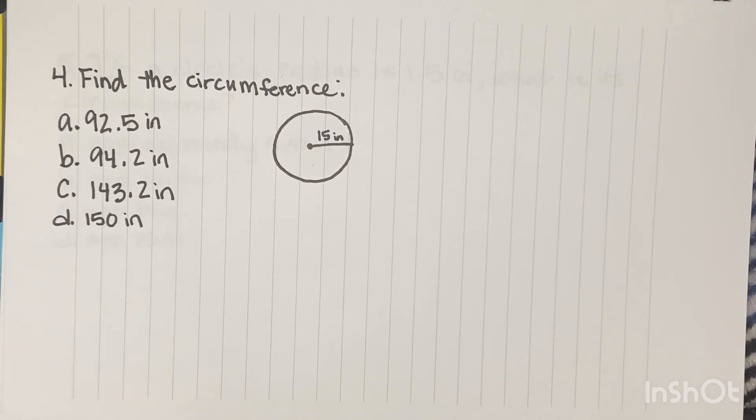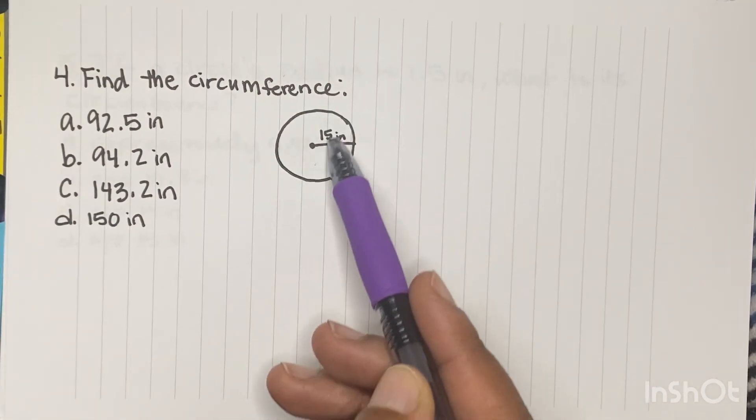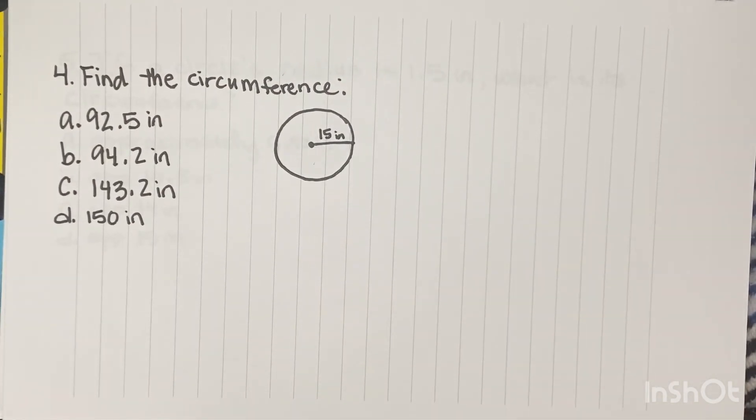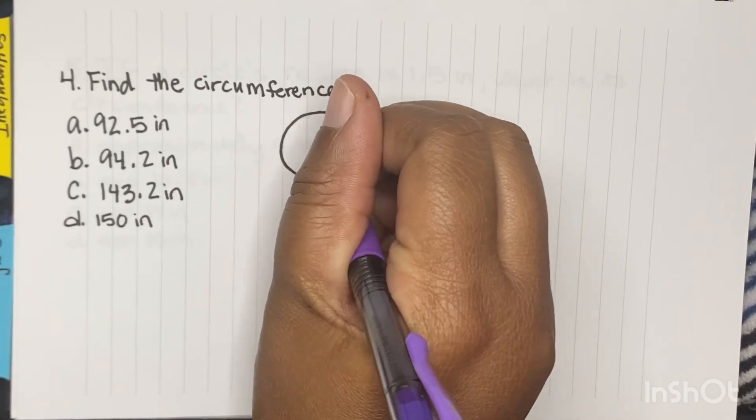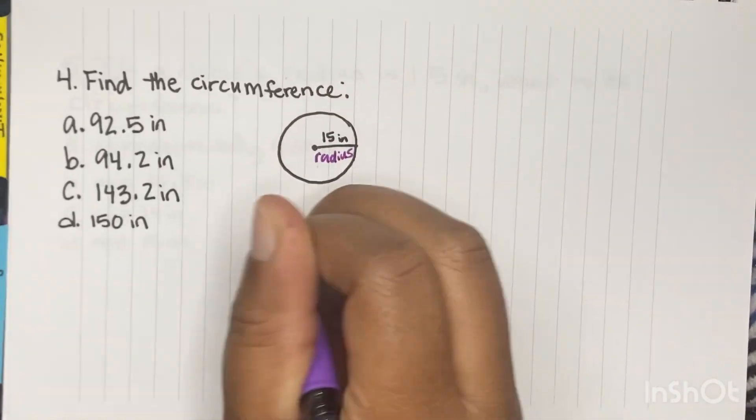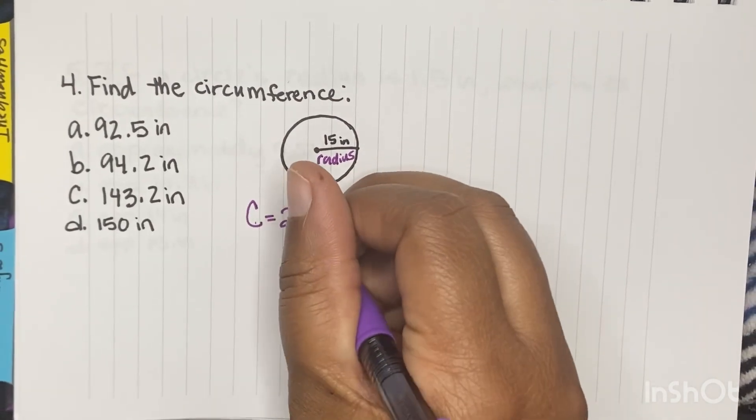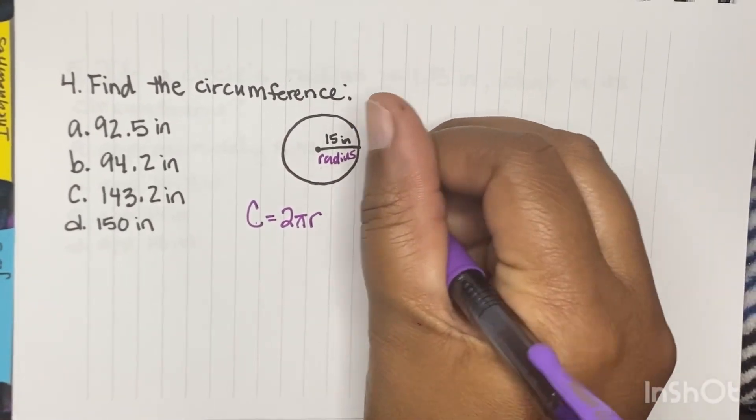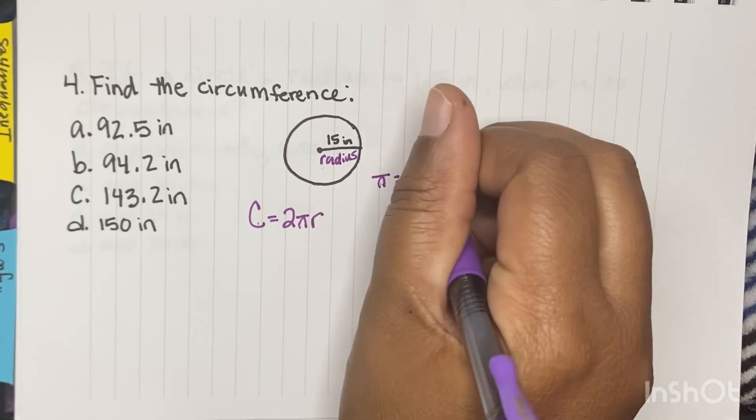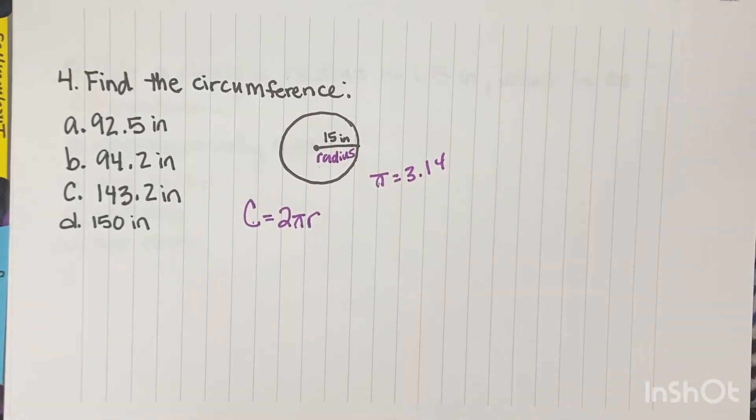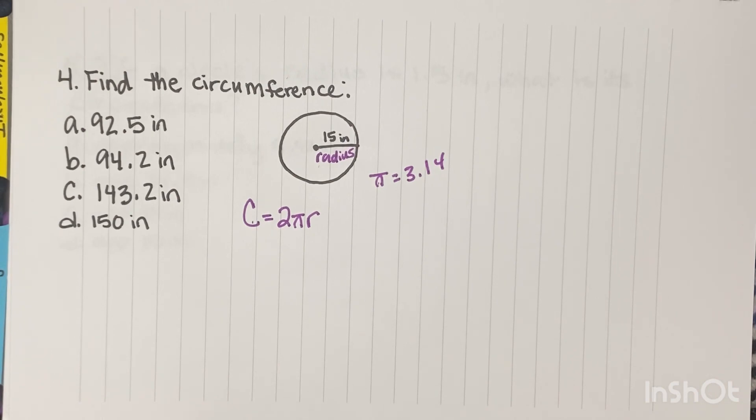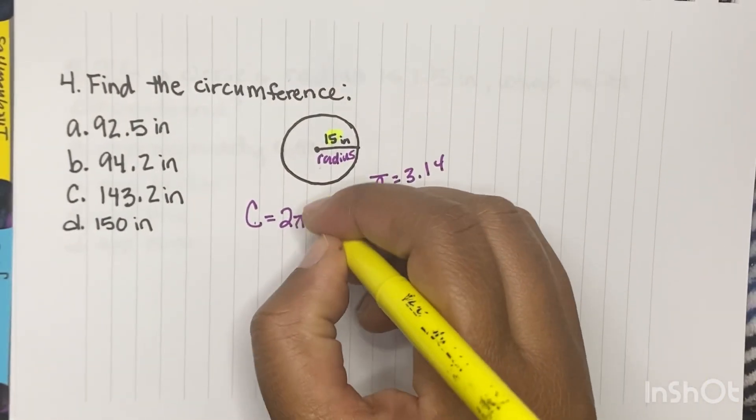Find the circumference. So this is again a circumference formula, it's a perimeter around the circle. This is called the radius here. And our formula is C equals 2 times pi times R. Again, pi is equal to 3.14. You have to have that memorized.